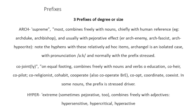Prefixes of degree or size: 'arch-' means supreme or most, combined freely with nouns chiefly with human reference, for example 'archduke,' 'archbishop,' and usually with pejorative effect: 'arch-enemy,' 'arch-fascist,' 'arch-hypocrite.' Note that 'archangel' is an isolated case with the pronunciation 'arch.' 'Co-' means on equal footing, combined freely with nouns and verbs: 'co-heir,' 'co-education,' 'co-pilot,' 'co-religionist,' 'co-habit,' 'co-operate,' 'co-exist.'